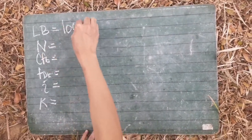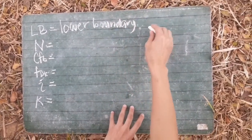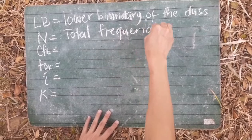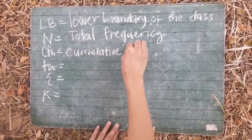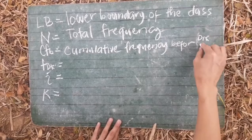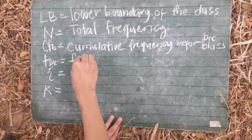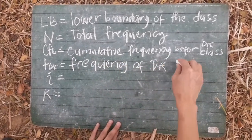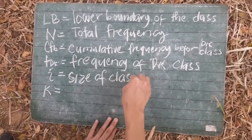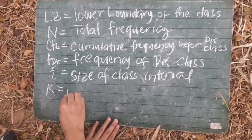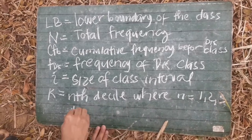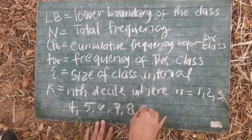So the meaning of LB is lower boundary of the dk class. N is the total frequency. CF is cumulative frequency before dk class. F is frequency of dk class. I is the size of class interval. K is the nth decile, where n is equal to 1, 2, 3, 4, 5, 6, 7, 8, and 9.